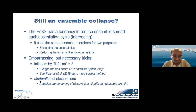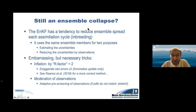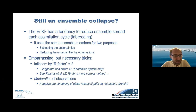There's also what we call moderation of observations — an adaptive pre-screening. If an observation is too far from what the model predicts, should you assimilate it or reject it because it fails the background check? In our case, if the PDFs of observation and model don't match, we stretch the observation errors until there is a reasonable overlap with the ensemble spread. This allows soft assimilation of observations that are far outside the model, which is better than assimilating in a domain where neither model nor observation has any probability.